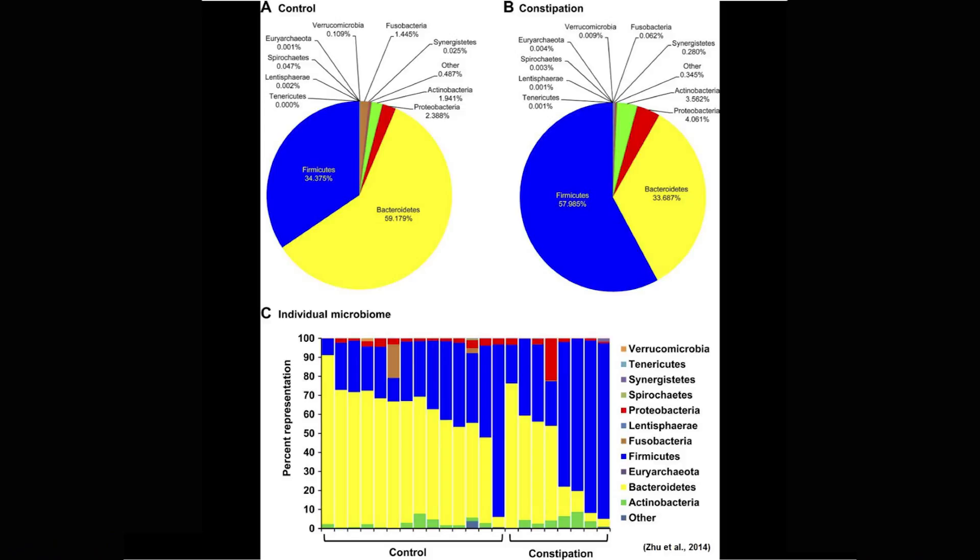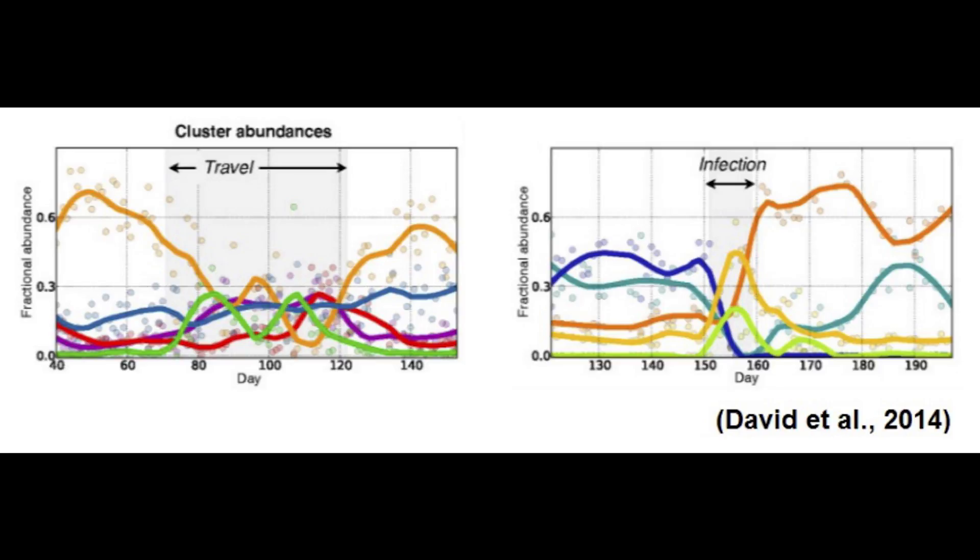We don't have to have very drastic diseases — this is a very common problem many of us would have: constipation. Once we are constipated, the blue color pie chart already takes over the rest. Once we change a little bit of our lifestyle or experience discomfort, our good bacteria in our gut actually decrease. Those of us who travel a lot can see that when we travel, the profile of microbiota also changes. When we stop travelling and go back home to our comfort zone, the microbiota resumes back to their normal population.